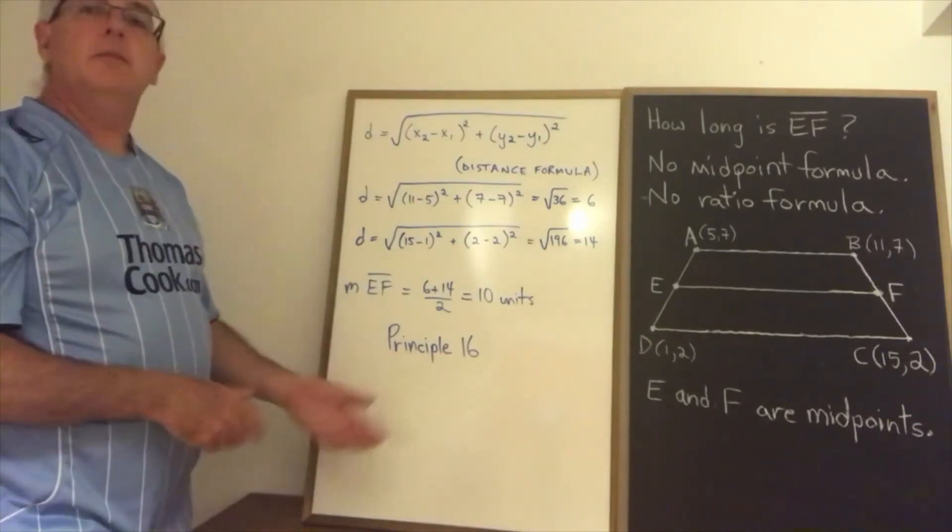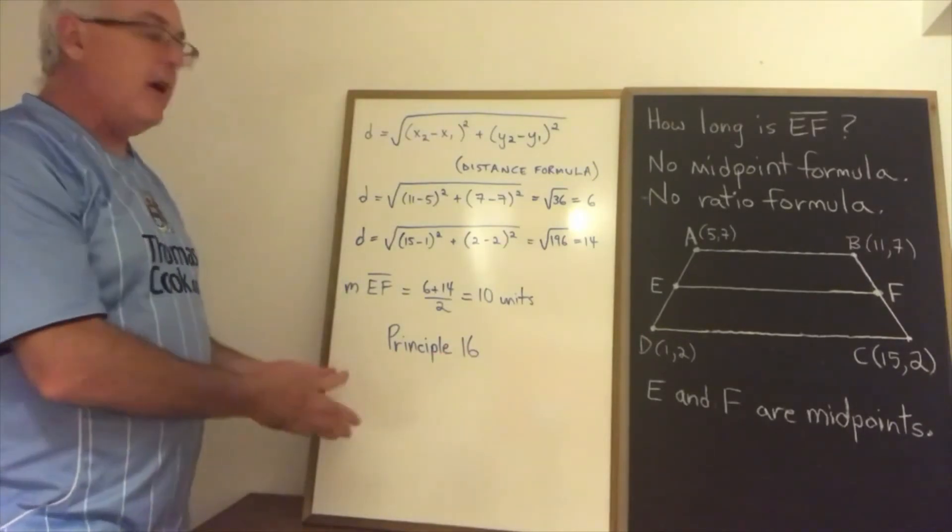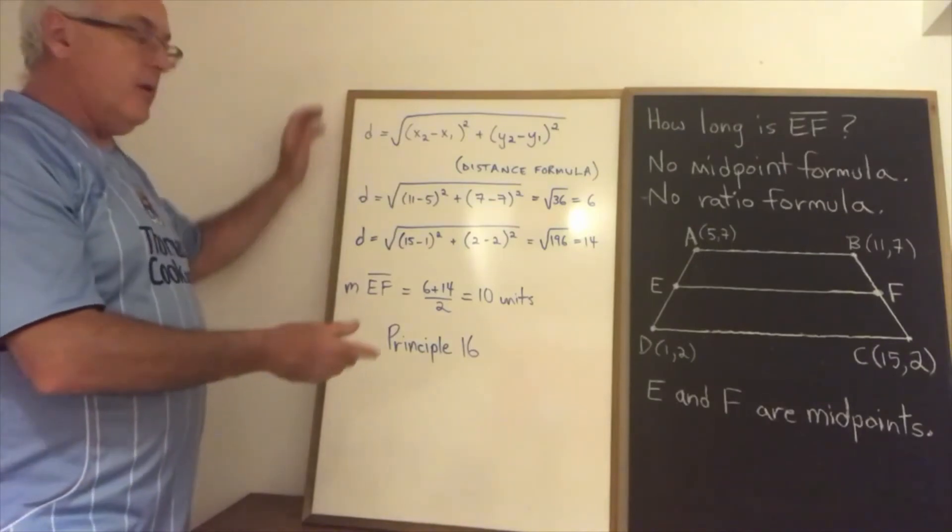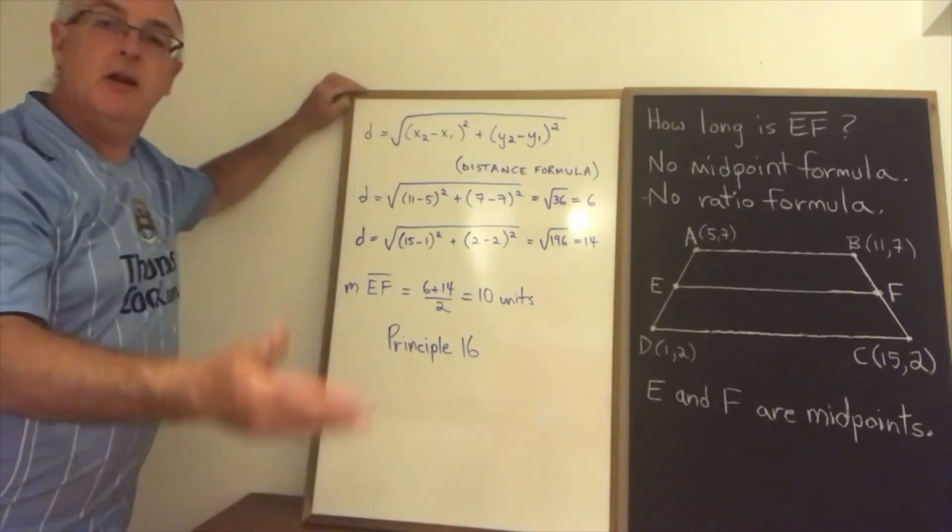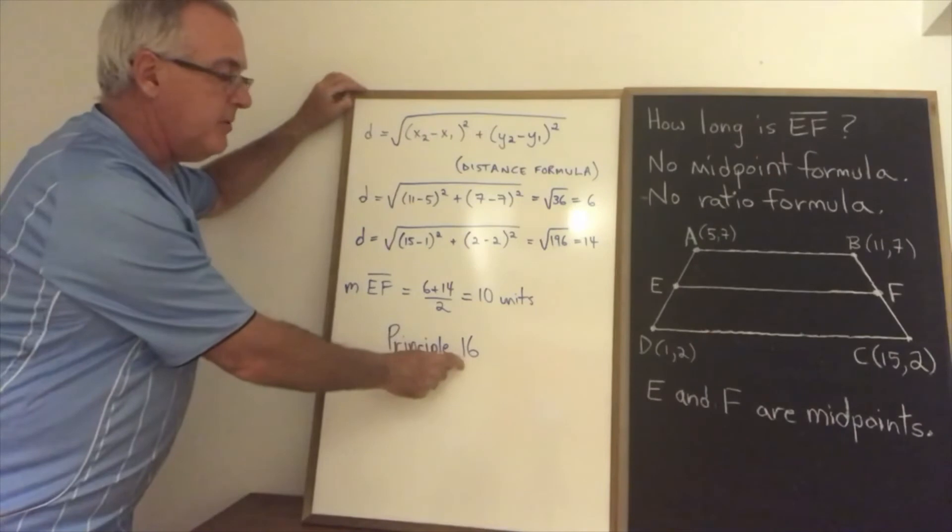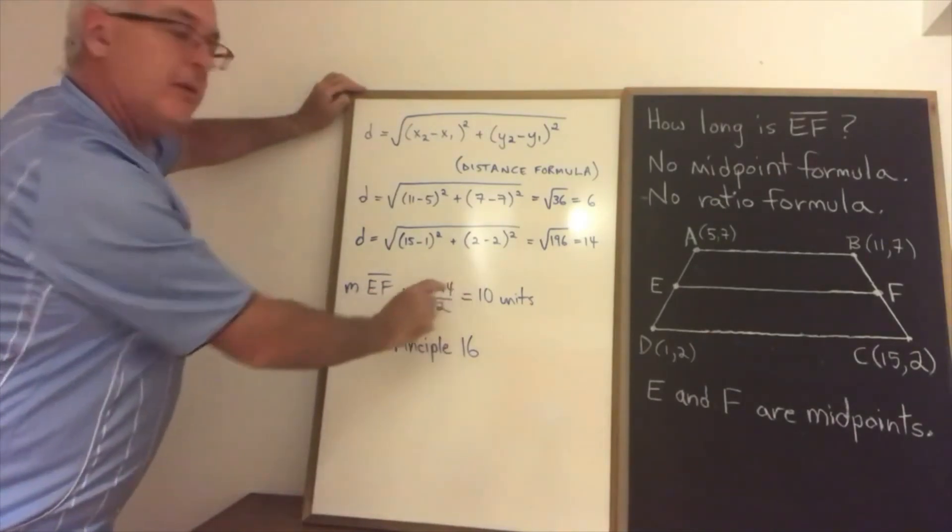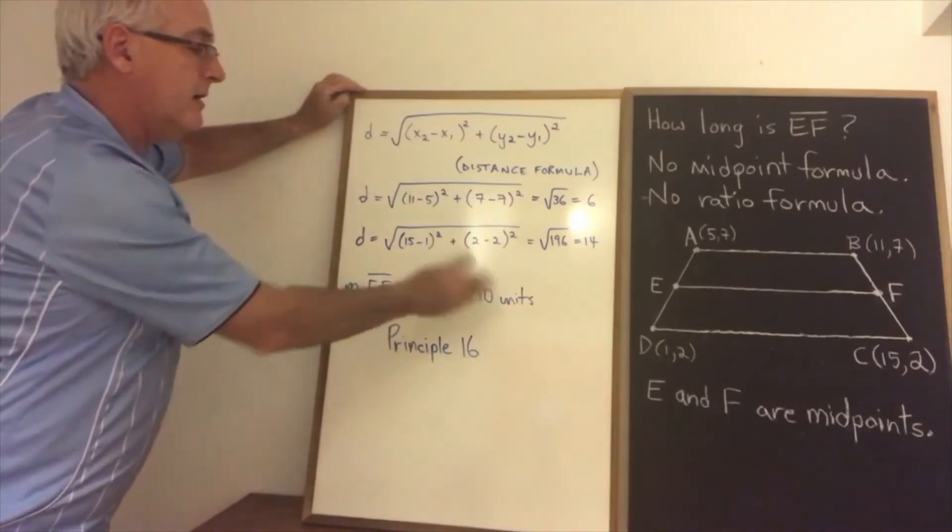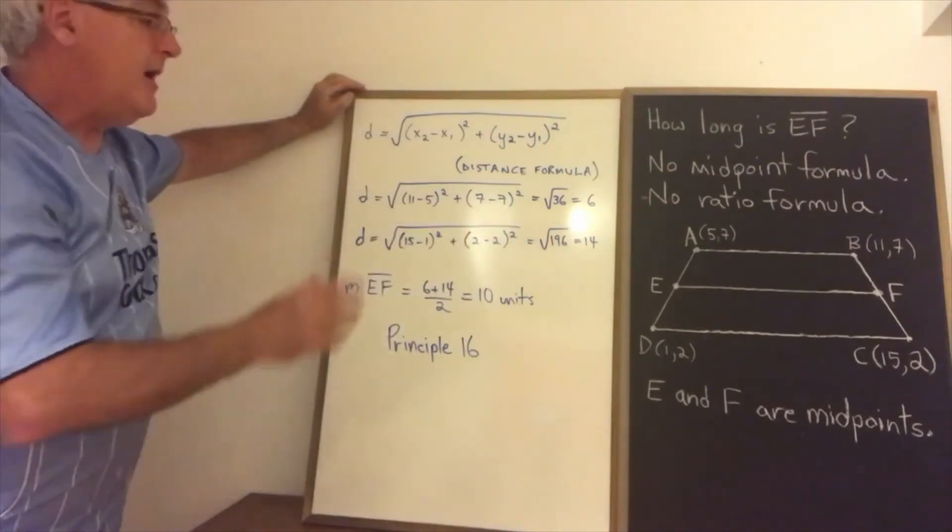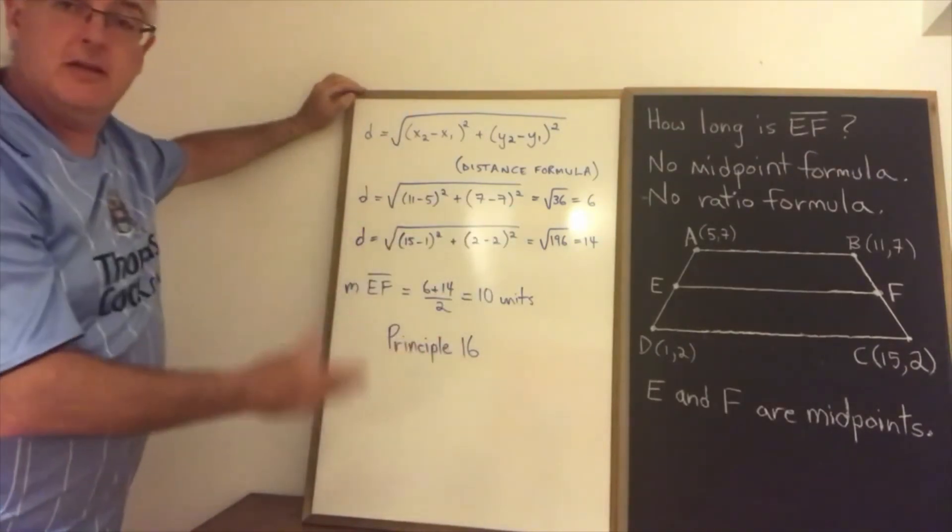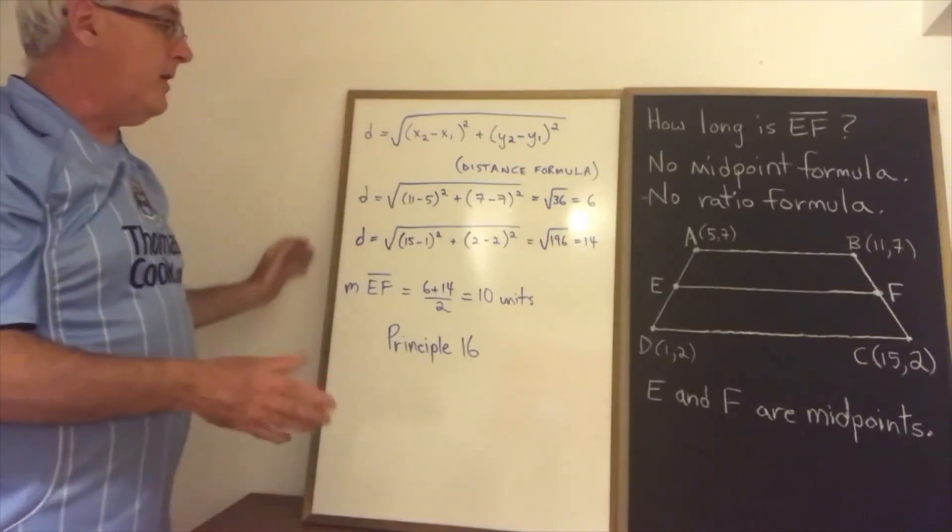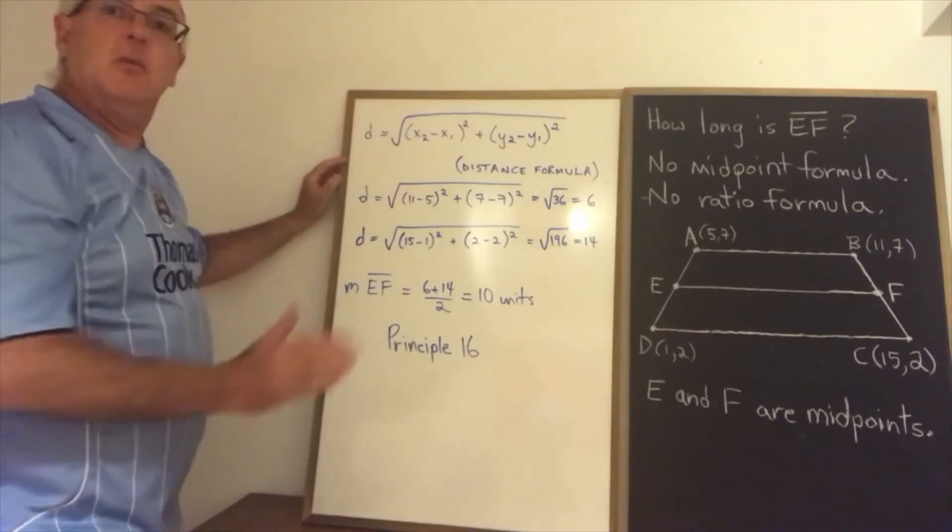Use principles and theorems as they are defined in your course. If you're doing Math 4273 in my class, you're safe to say principle 16 right here. So this is actually a very simple little bit of math to find the length of segment EF. And that's the value of using these theorems and principles. They actually provide us with a lot of fast ways through problems.